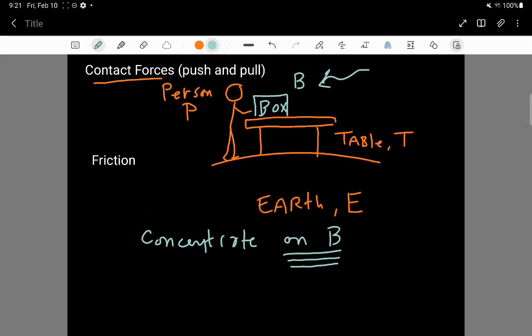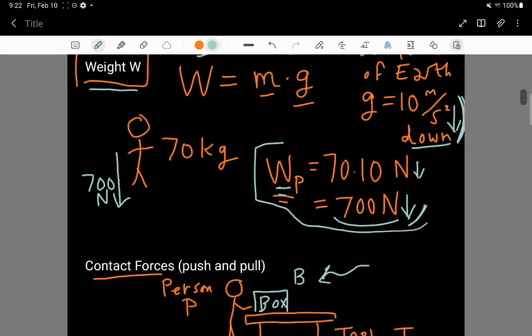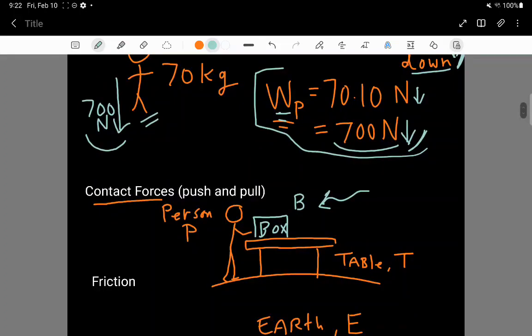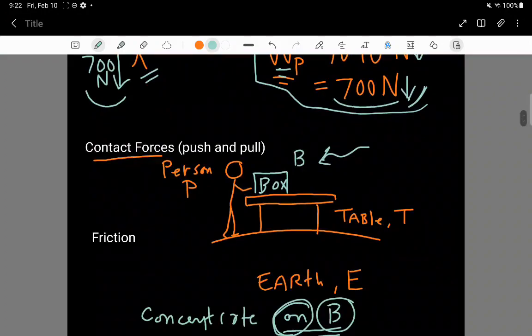So this is our focus. It's to concentrate on forces acting on the box. Up here, we had a person, and I showed you the weight force that acts on the person. That 700 newton force, we are not going to concentrate on it for the box because that 700 newton force does not act on the box. It acts on the person. So let's concentrate only on the box.